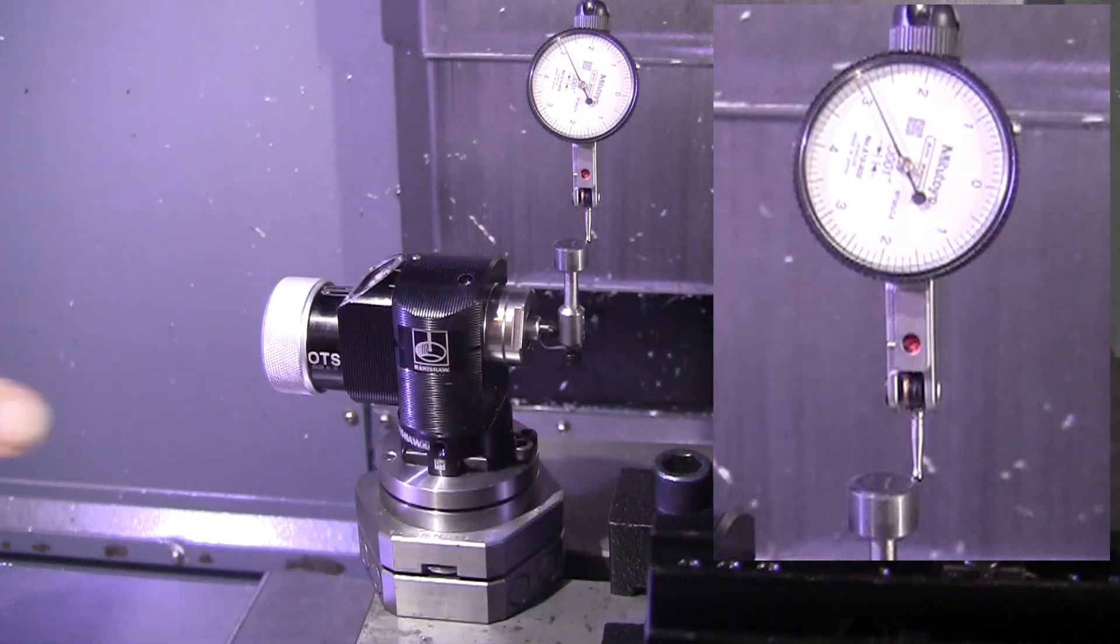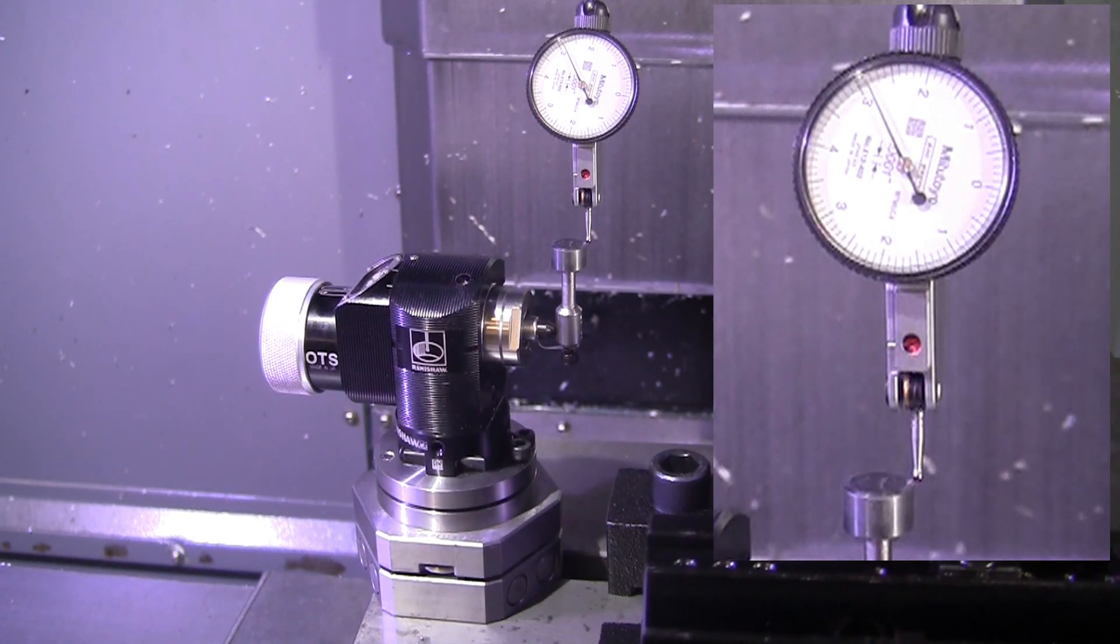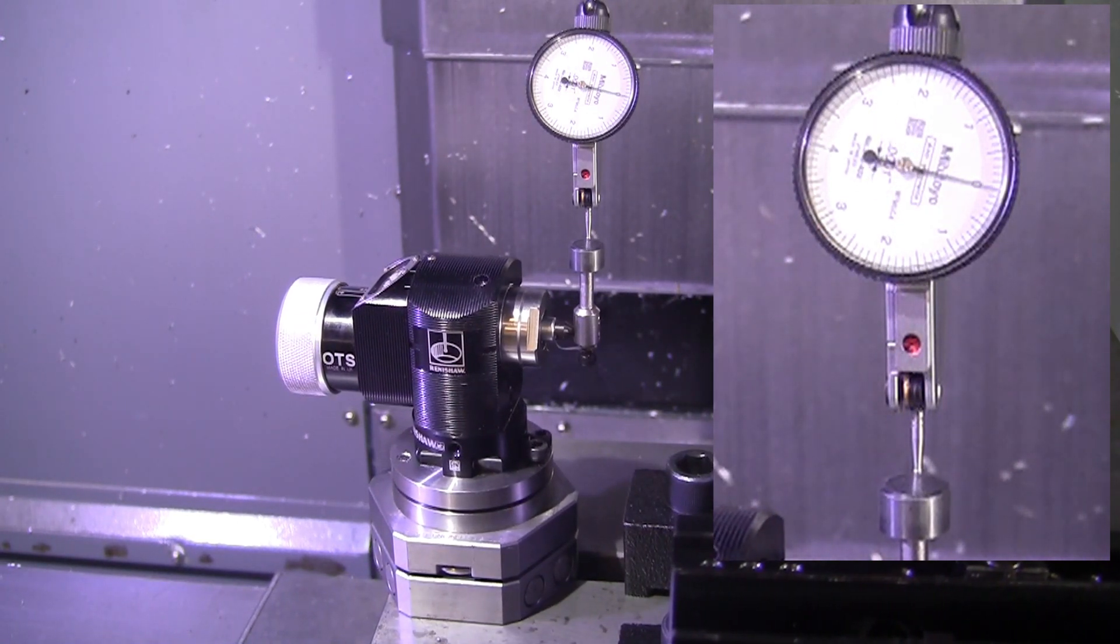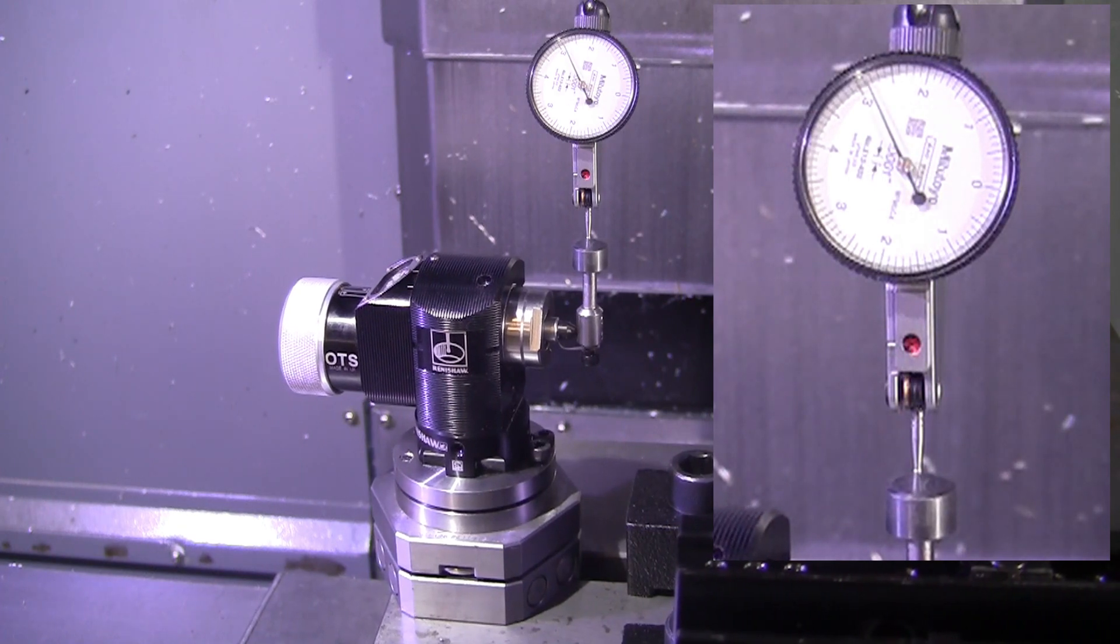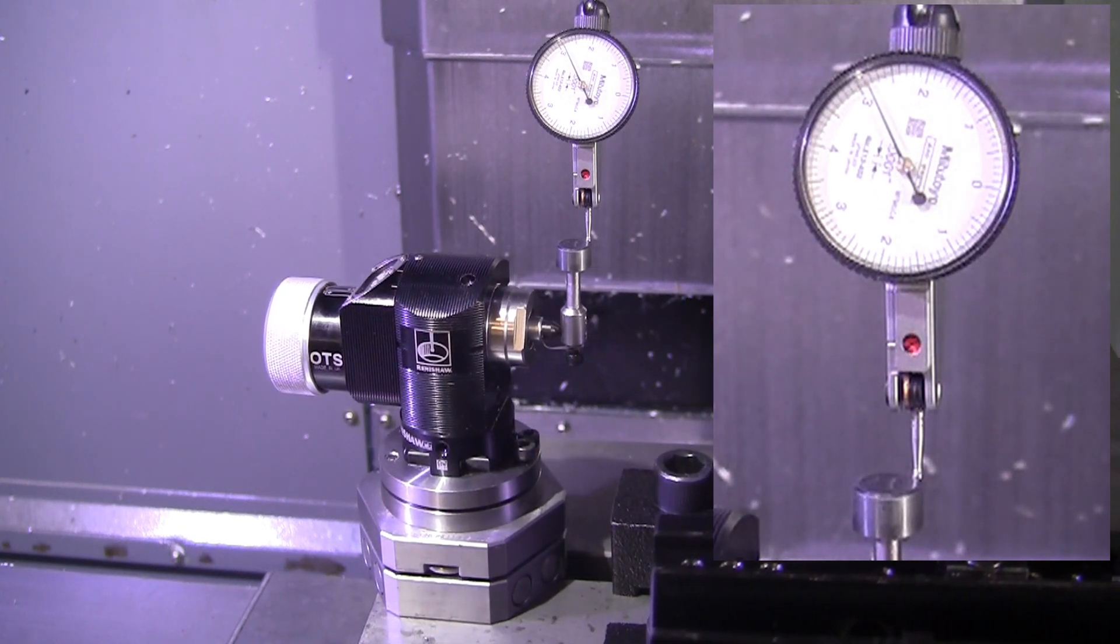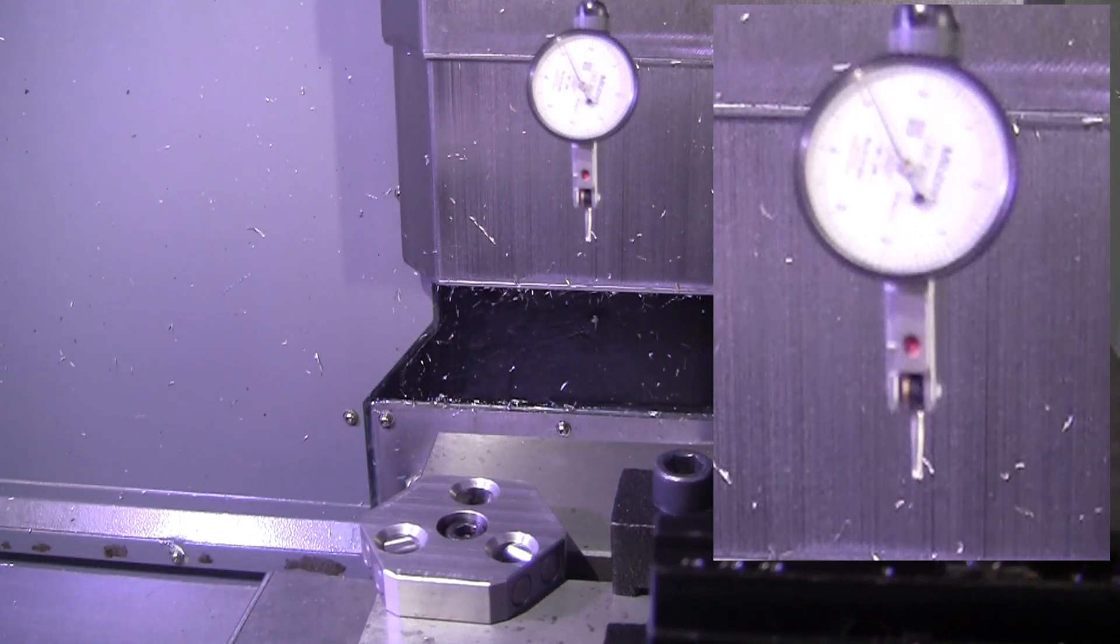As you can see, we're removing the tool probe from its kinematic base and passing it across a test indicator. Then we remove it from the kinematic base, put it back on, and again pass it across the test indicator.